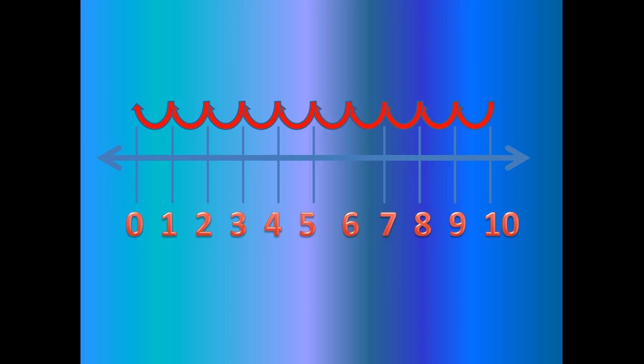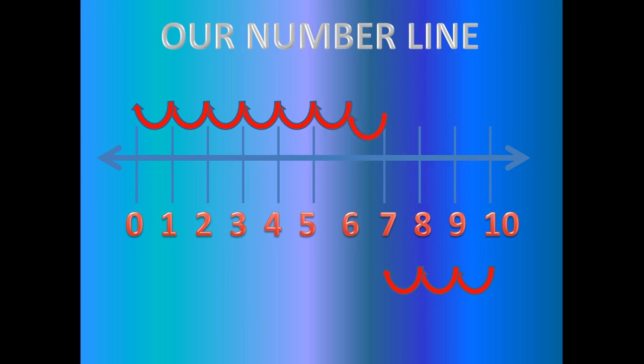Now let's look at our number line for the last time. Nine is less than ten. Eight is less than nine and ten. This pattern continues for all of our numbers.